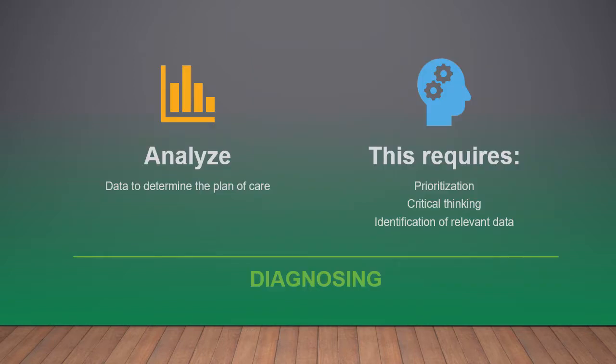In the diagnosing step, you're going to analyze the data to determine the best plan of care, or what the priority nursing diagnoses are. This requires you to prioritize all potential and actual nursing diagnoses, apply critical thinking — which requires experience — and to identify relevant data and set aside irrelevant data. For example, if a patient is slightly tachycardic with an irregular heart rate but that's their baseline, you wouldn't want to work that into your plan of care to normalize it, because that is normal for that patient.